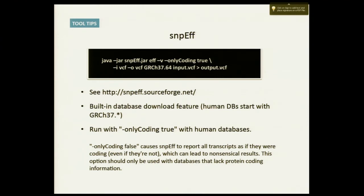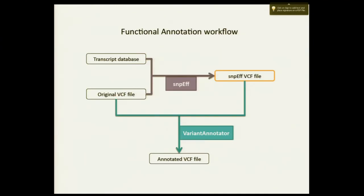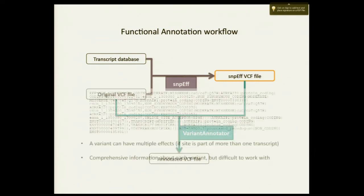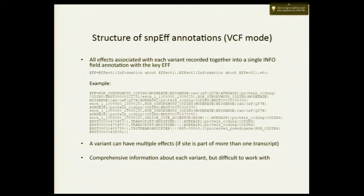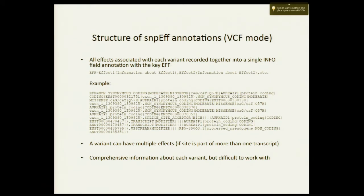Out of this step, you have this output file. It's going to look like this — this is one record and there's a lot of information in there. What it does is give you the effects associated with every single transcript at that position. There could potentially be a lot of alternate transcripts that overlap a position, and you have a lot of data to parse through. This is kind of cumbersome and hard to deal with.